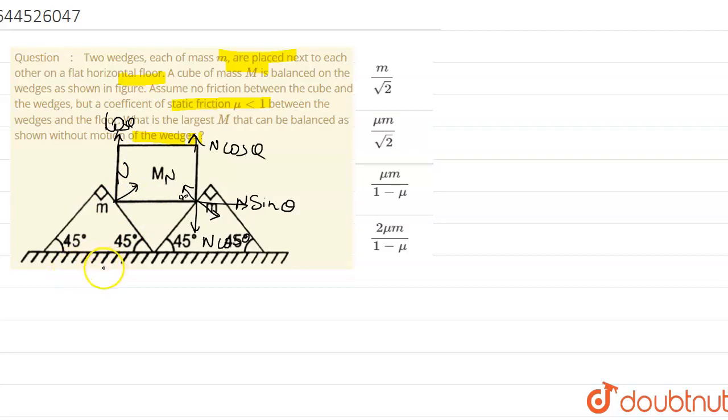Now if you resolve this, you get 2n cos theta equals 2n cos 45 degrees equals mg. So you will get root 2 n equals mg.